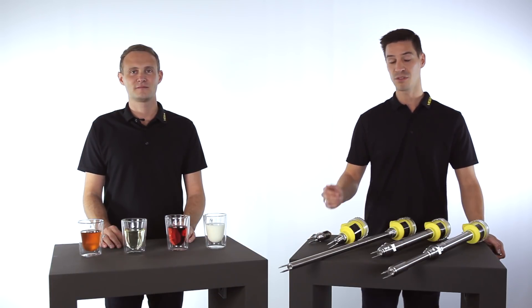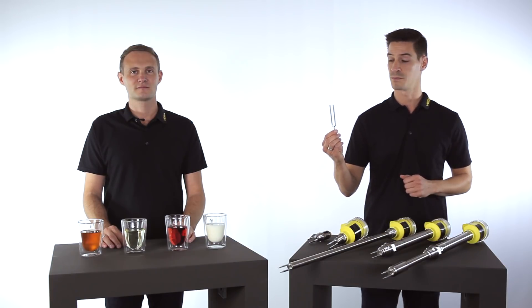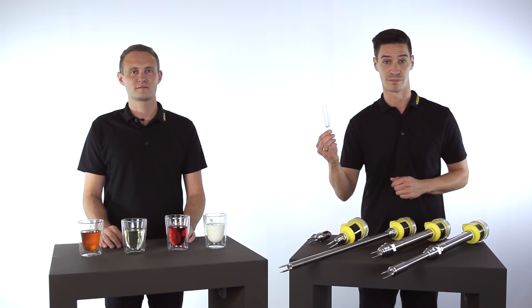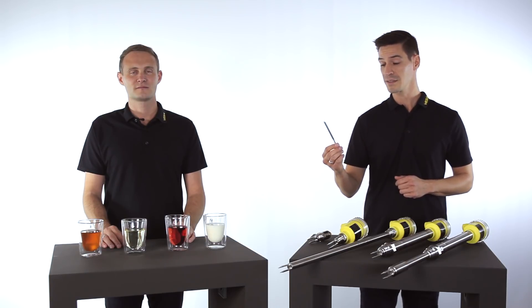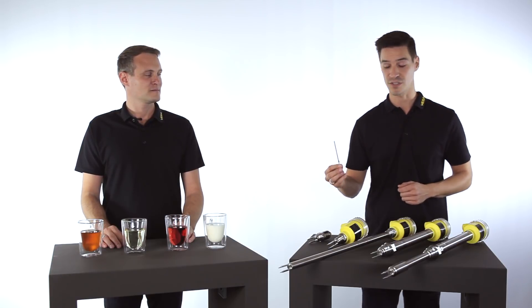A vibrating point level switch is comparable with a tuning fork functionally. You might remember from your music lessons at school, by striking the tuning fork slightly we put the tuning fork into its resonance frequency.